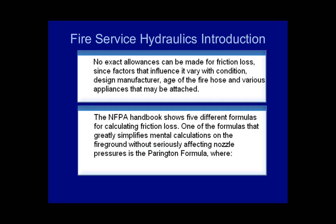The NFPA Handbook shows five different formulas for calculating friction loss. One of the formulas that greatly simplifies mental calculations on the fire ground without seriously affecting nozzle pressures is the Parrington formula, where FLR, or friction loss rate, equals 2Q squared. Q equals GPM divided by 100.